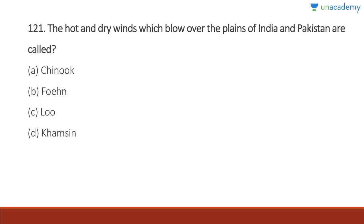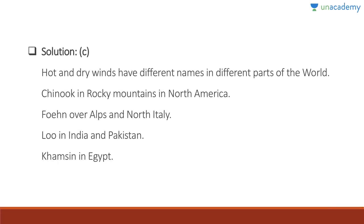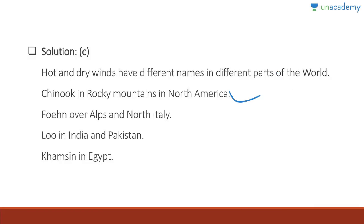Question 121: The hot and dry winds blowing over the plains of India and Pakistan, especially the Rajasthan-Delhi belt, are called Loo. Hot and dry winds have different names in different parts of the world: Chinook in the Rocky Mountains, Foehn over the Alps and North Italy, Loo in India and Pakistan, and Khamsin in Egypt.